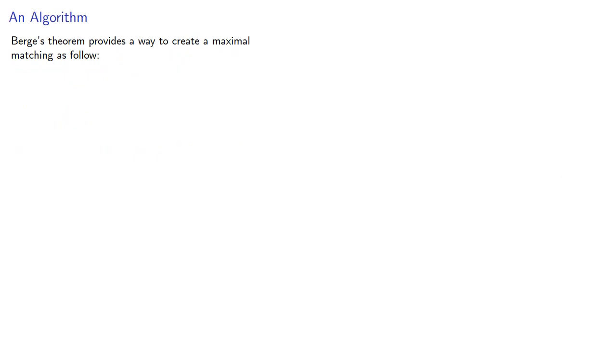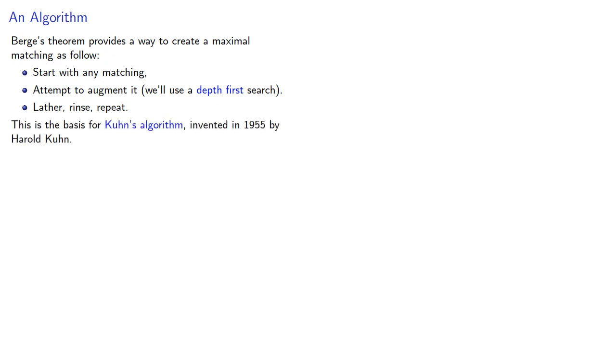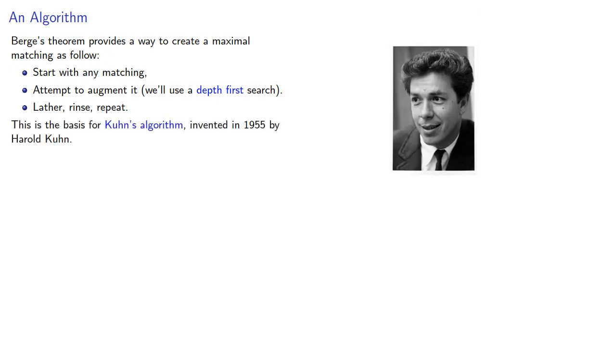Berge's theorem provides a way to create a maximal matching as follows. Start with any matching. Attempt to augment it using a depth-first search. Lather, rinse, repeat. With some modifications, this is the basis for Kuhn's algorithm, invented in 1955 by Harold Kuhn.